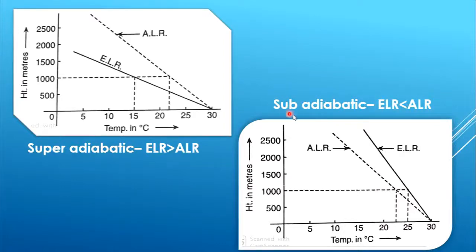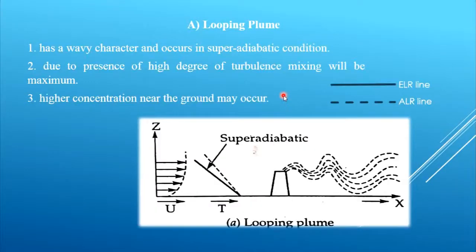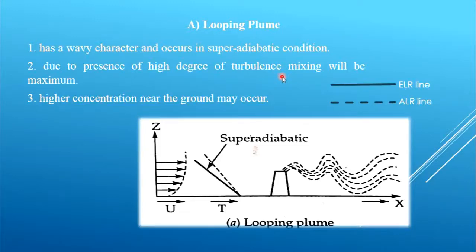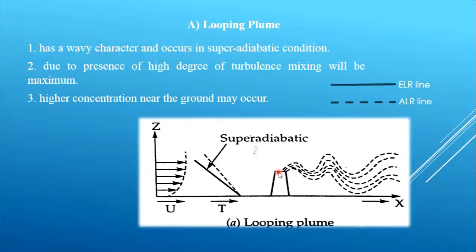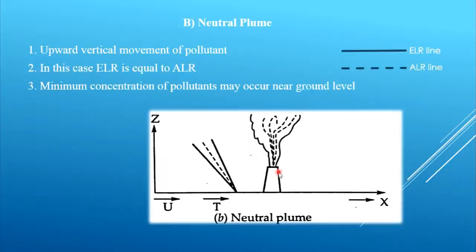The first plume is the looping plume. It only occurs when the environment is superadiabatic, which creates a highly unstable environment. Thus dispersion and mixing of air pollutants is rapid. In some cases, due to the presence of high turbulence, higher ground concentration may occur. Due to this problem, in areas having superadiabatic conditions, higher stacks may be needed to ensure very good dispersion of air pollutants.